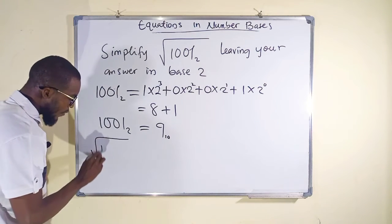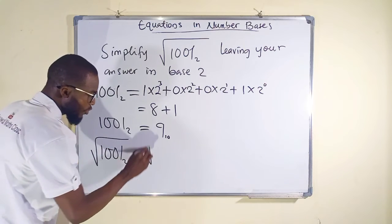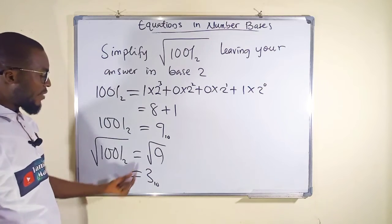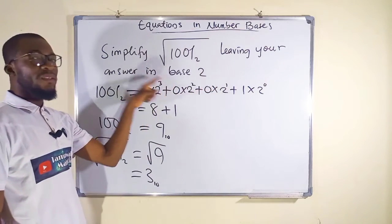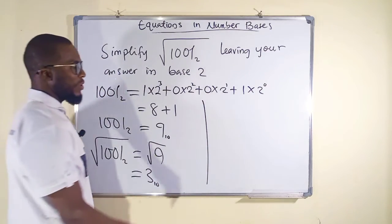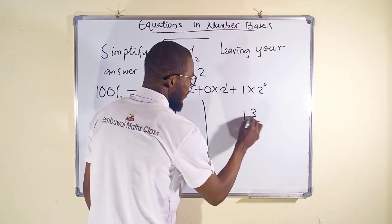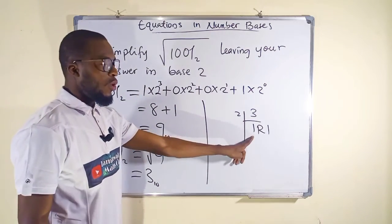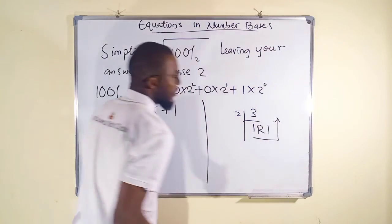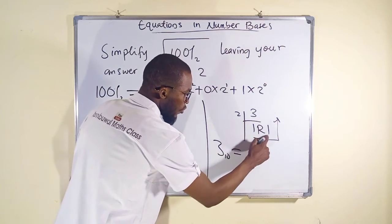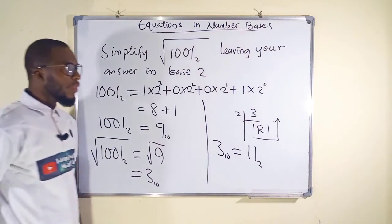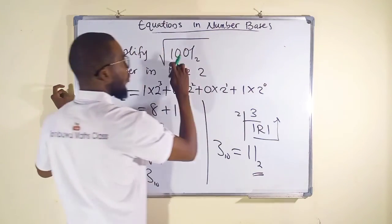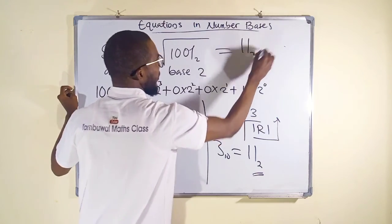Therefore, the square root of 1001 in base 2 is the same as the square root of 9, which equals 3 in base 10. But the question requires the answer in base 2. Converting 3 to base 2 by successive division: 3 divided by 2 gives 1 remainder 1; 1 divided by 2 gives 0 remainder 1. Reading remainders upward, 3 in base 10 equals 11 in base 2. So the square root of 1001₂ is 11₂.